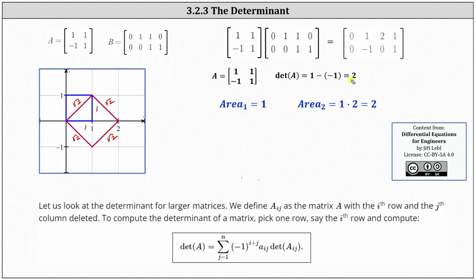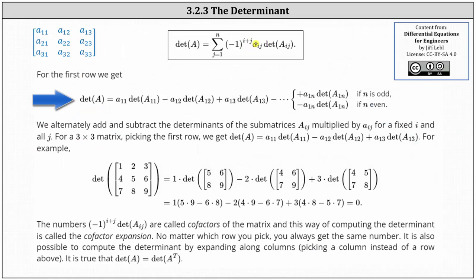Now let us look at the determinant for larger matrices. We define matrix A sub ij as the matrix A with the i-th row and j-th column deleted. To compute the determinant, we pick one row — say the i-th row — and compute using the formula: the determinant of matrix A equals the sum from j equals one to n of negative one raised to the power of i plus j, times the element a sub ij, times the determinant of matrix A sub ij. The exponent on negative one indicates whether we add or subtract: if i plus j is even we add; if i plus j is odd we subtract.